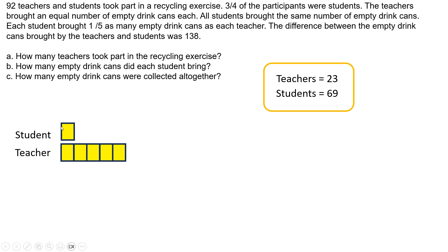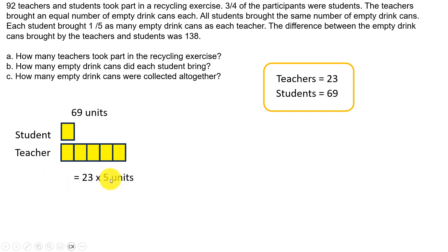We do not know the exact quantity, but what we know is each student brings this many number of empty cans, and there are a total of 69 students. So the number of empty cans brought by the students would be 69 times 1 unit, which is 69 units. Similarly, each teacher brings 5 of these units, and there are a total of 23 teachers. So the total for teachers is 23 times 5 units, which is 115 units. So students bring 69 units whereas teachers bring 115 units. The difference between the empty drink cans brought by the teachers and the students was 138.